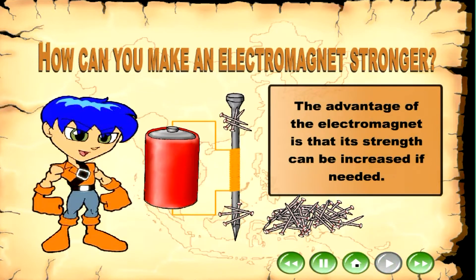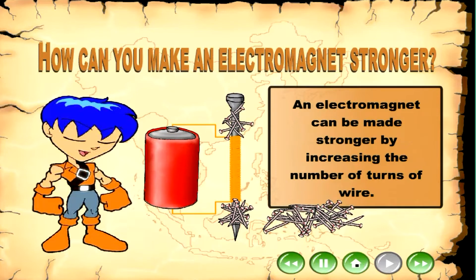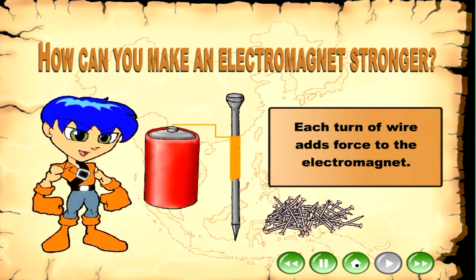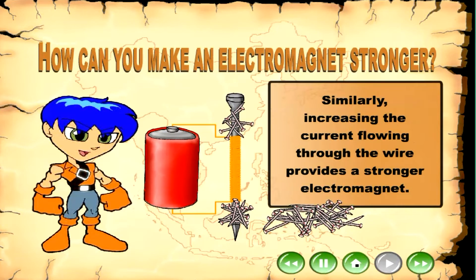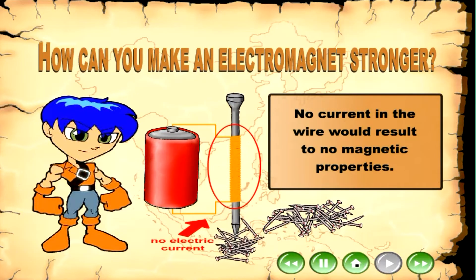The advantage of the electromagnet is that its strength can be increased if needed. An electromagnet can be made stronger by increasing the number of turns of wire. Each turn of wire adds force to the electromagnet. Similarly, increasing the current flowing through the wire provides a stronger electromagnet. No current in the wire would result in no magnetic properties.